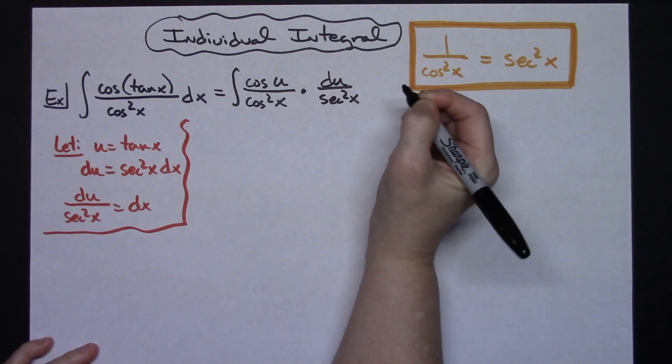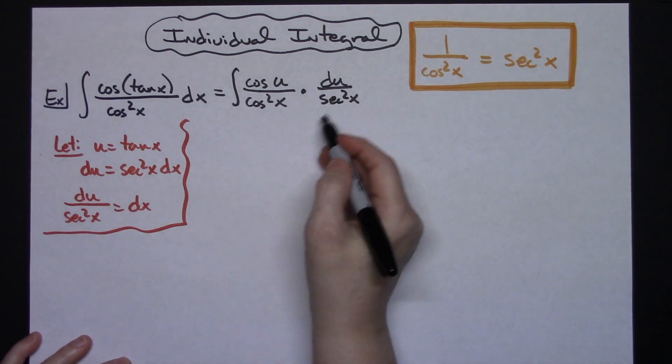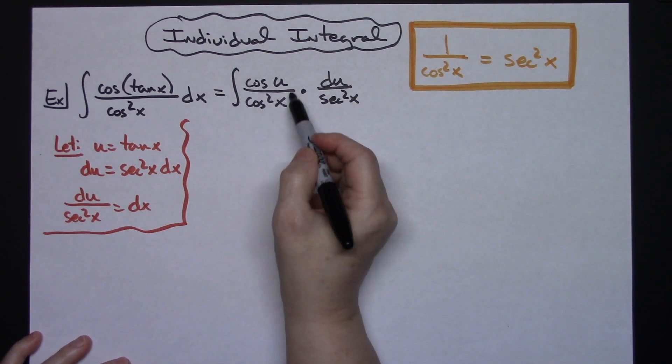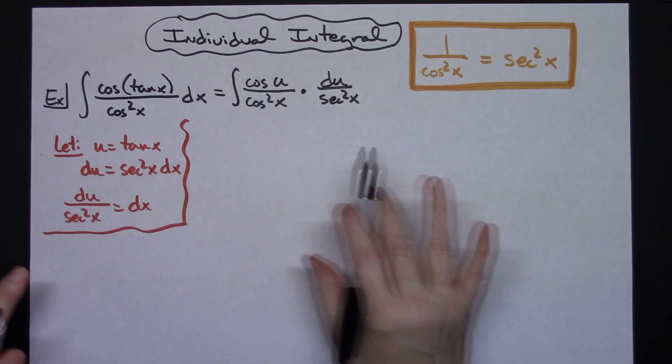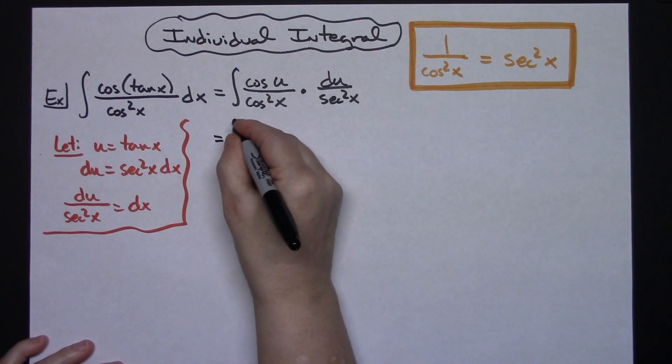At this point, it may be difficult to see that this substitution is going to work. I'm going to take this part of the integral and separate it out so we can more clearly see 1 over cosine squared. I'm going to take that cosine u times 1 over cosine squared x.